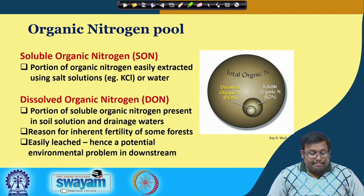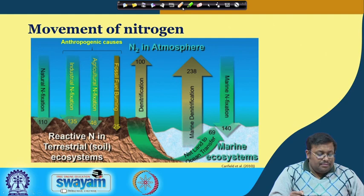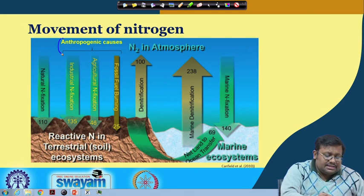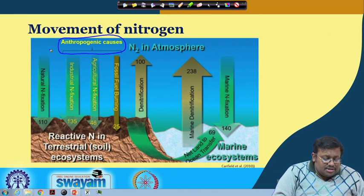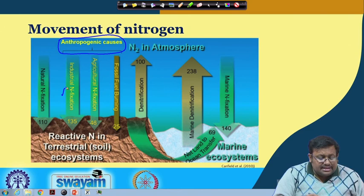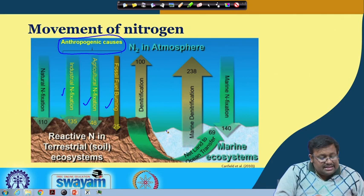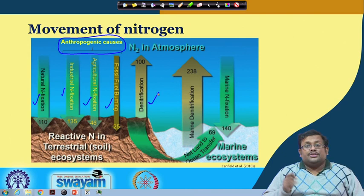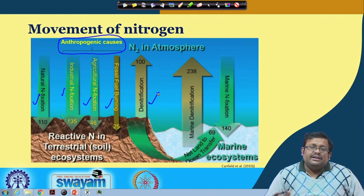Considering the terrestrial and marine ecosystems, what are the different pathways of nitrogen transfer? Some anthropogenic causes are given here. Anthropogenic causes for nitrogen addition include industrial nitrogen fixation, agriculture nitrogen fixation, and fossil fuel burning. All these are anthropogenic causes, and there is also natural nitrogen fixation. Nitrogen in the atmosphere enters when denitrification takes place — denitrification is basically the conversion of nitrate into gaseous nitrogen by different microorganisms, specifically under anaerobic conditions.